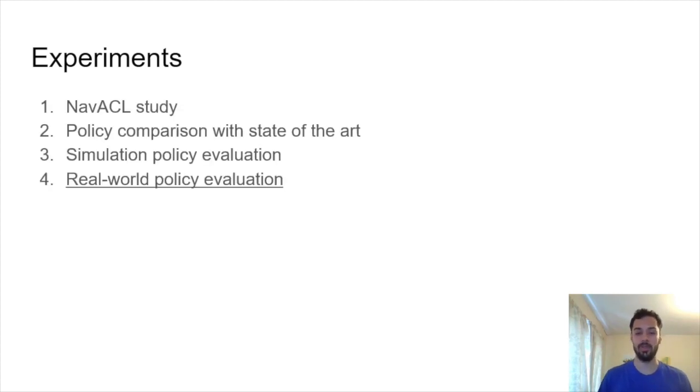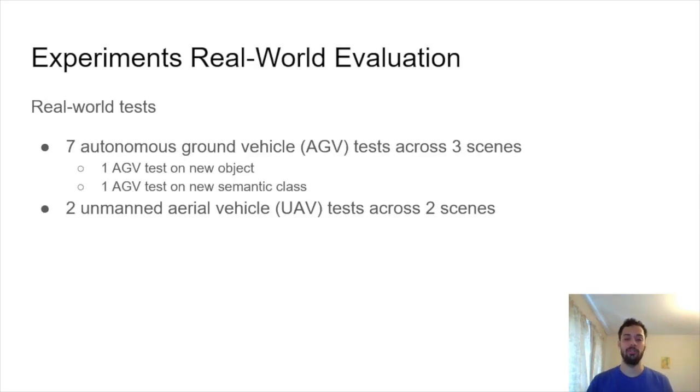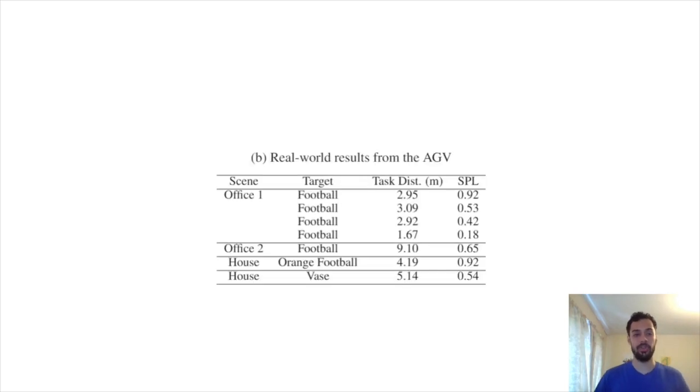So far all of our experiments have been in simulation. What happens when we take that policy we just trained and we put it on a robot in the real world? We did seven autonomous ground vehicle tests across three scenes. One AGV test was on a never-before-seen object and one AGV test was on a completely new semantic class. We also did two UAV tests across two distinct scenes. These are the real world results from our autonomous ground vehicle tests. We have the name of the scene, we have the target we're navigating to. Note that we always trained on a football, so during test time we can navigate to footballs, different types of footballs, or even completely different semantic classes. Over here we have the separation from start to goal, how far the task is, and then we have the last column, the resulting SPL that our real world agent was able to achieve.